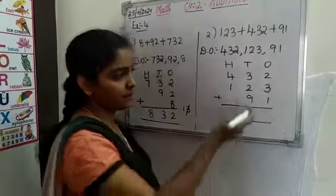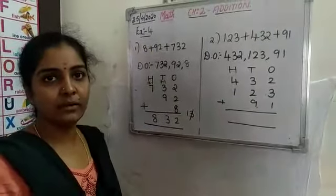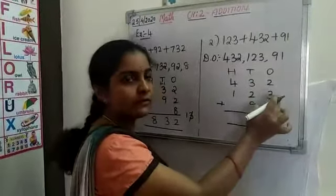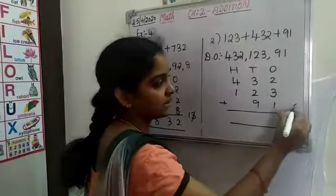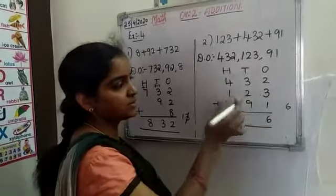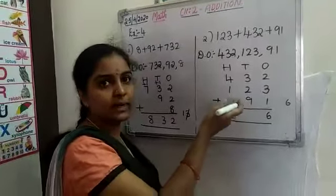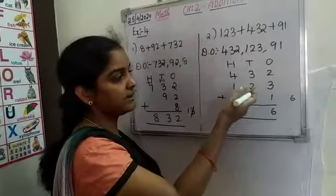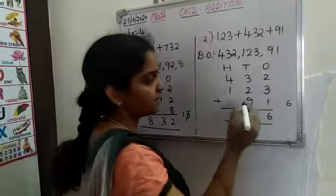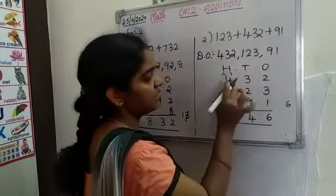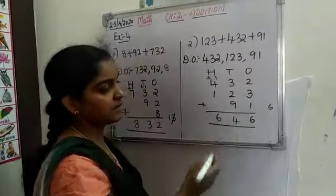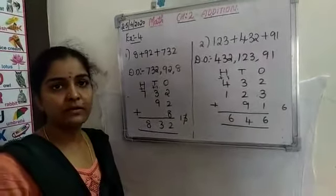Now 2 plus 3 is 5, and 5 plus 1 is 6 — only a single digit, so write 6 directly in ones place. For tens: 9 plus 2 is 11, and 11 plus 3 is 14. So write 4 in tens place and 1 is carry over. Then 4 plus 1 carry over is 5, and 5 plus 1 is 6. So our answer, the sum, is 646.